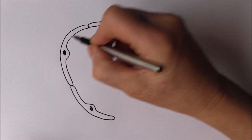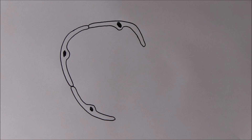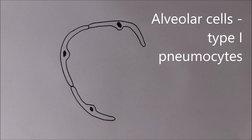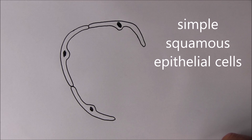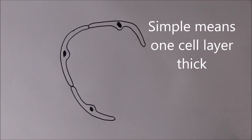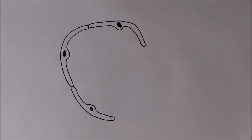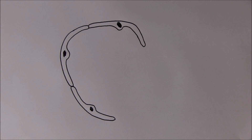Drawing the alveoli with alveolar cells - the dark-stained nucleus visible in each cell - these are called the type 1 alveolar cells, or type 1 pneumocytes. Pneumo means lungs, cyte means cells, and they are made of simple squamous epithelial cells. Squamous means the cells look squashed or flattened, and these type 1 pneumocytes actually occupy 90 to 95 percent of the internal surface area of the lungs.